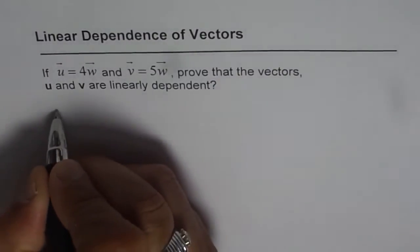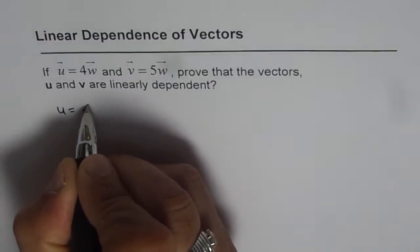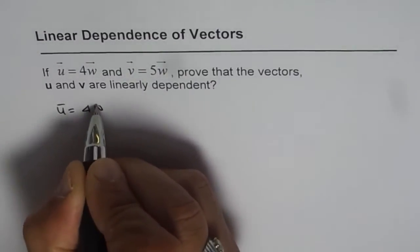We are given u equals 4 times w. The vector u is 4 times w.